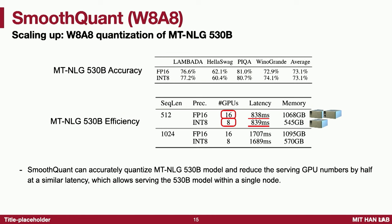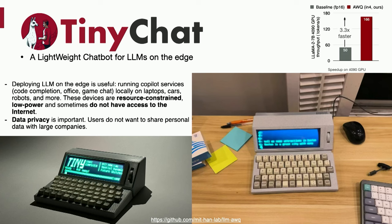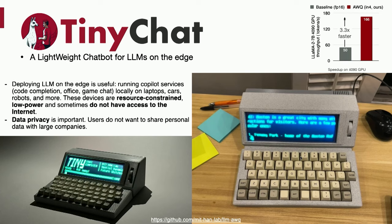We also collaborated with NVIDIA, pushing this to 530 billion parameters, which used to require 16 GPUs to serve — two DGX boxes at $300K each. Now we can reduce it by half to only 8 GPUs in one node, with latency very well maintained. This is the 8-bit quantization — very successful. And can we do better? Apart from the cloud, can we run these large language models locally on our laptops?